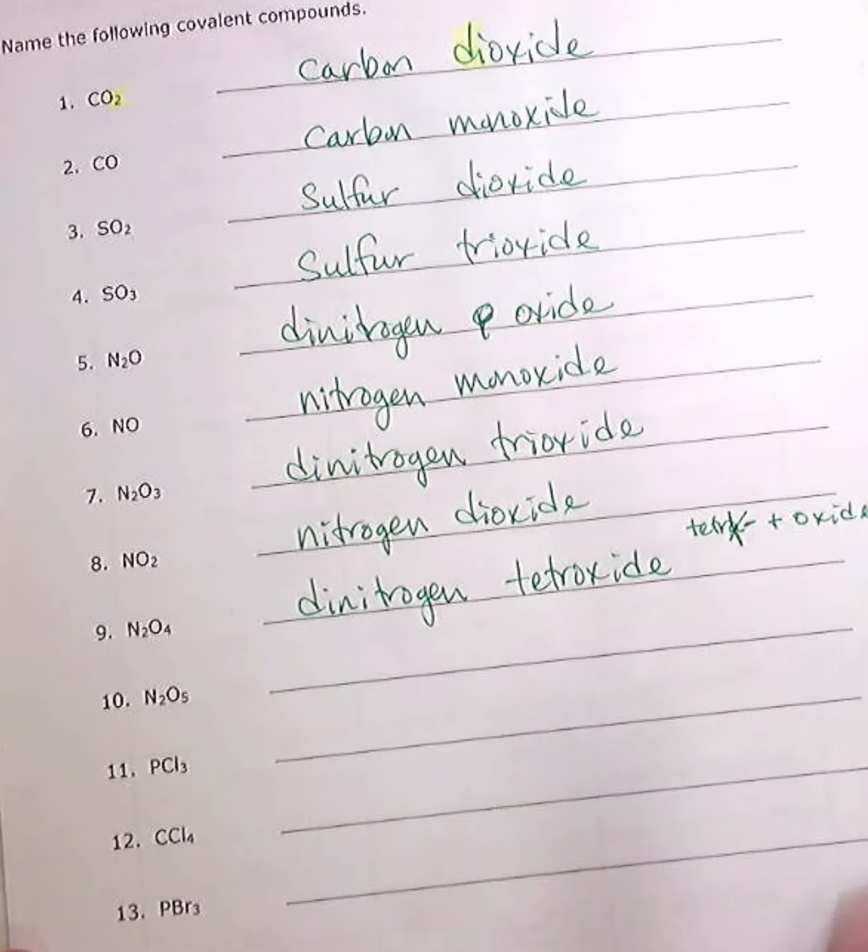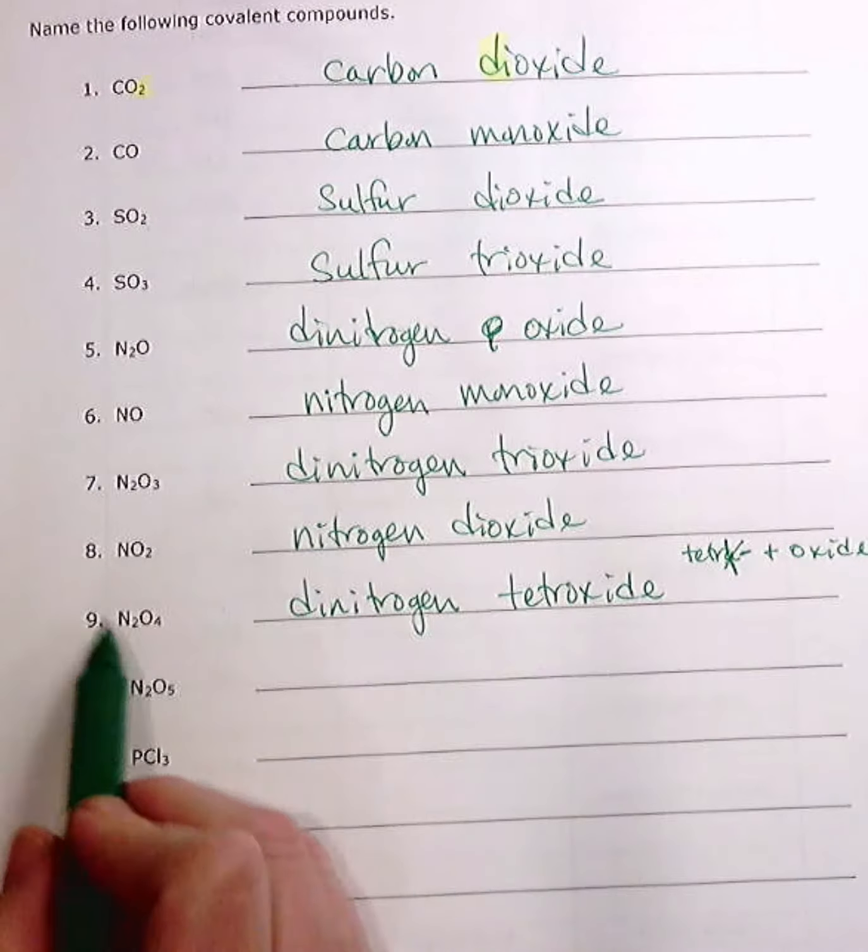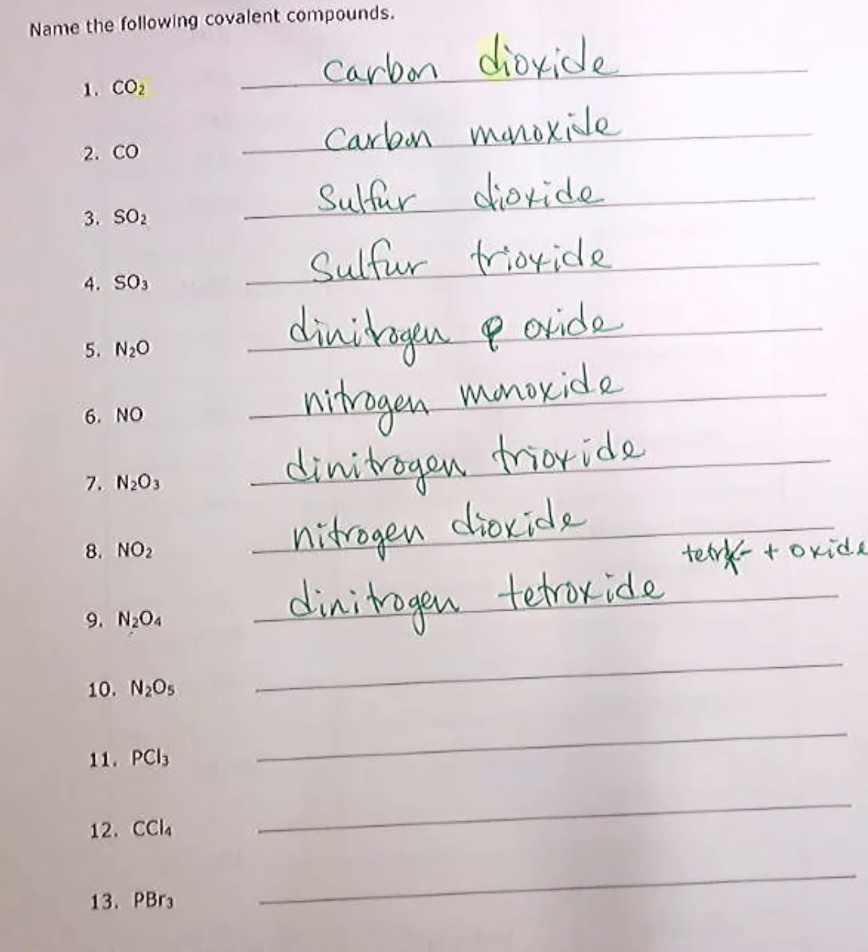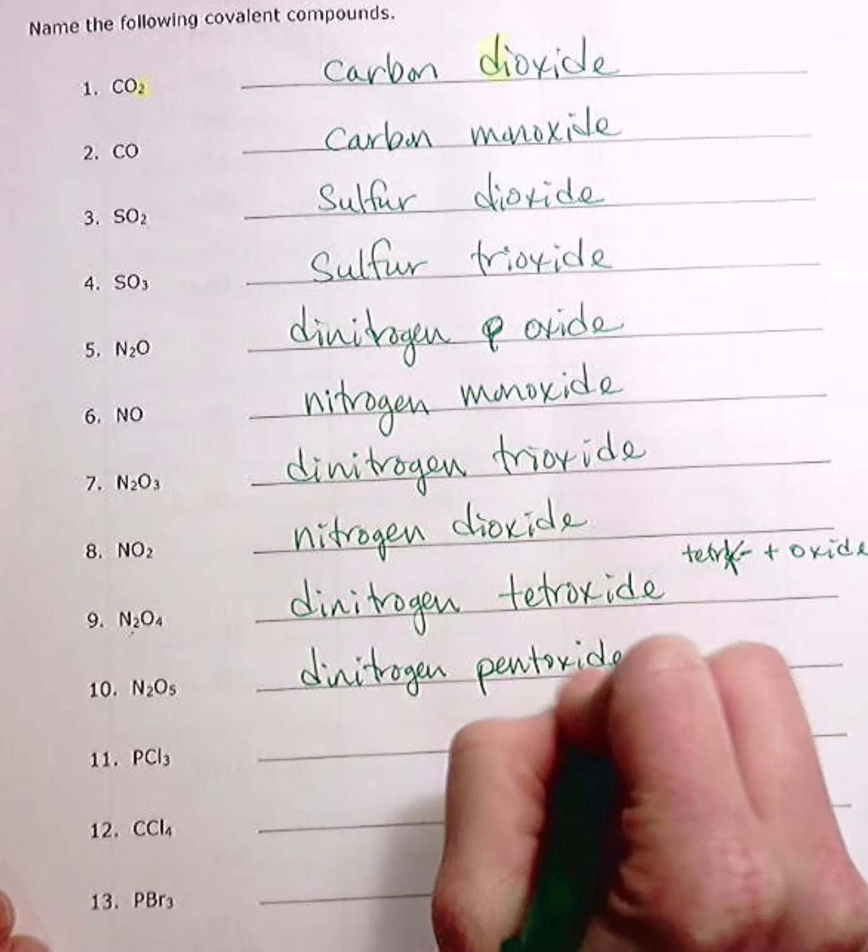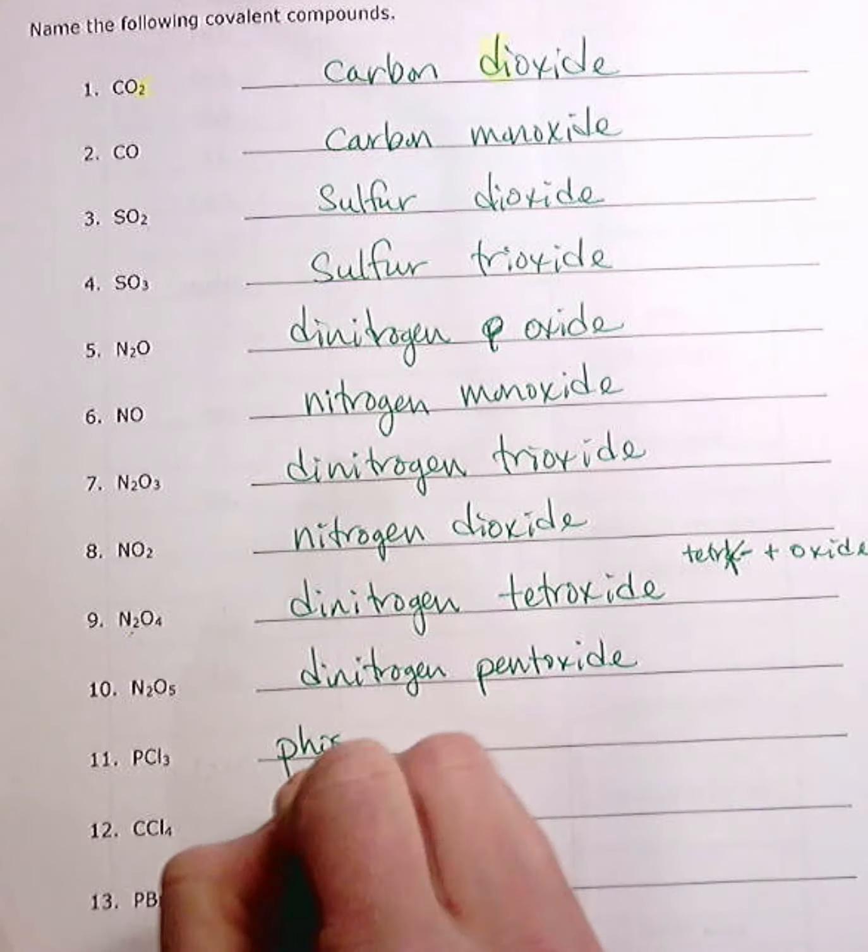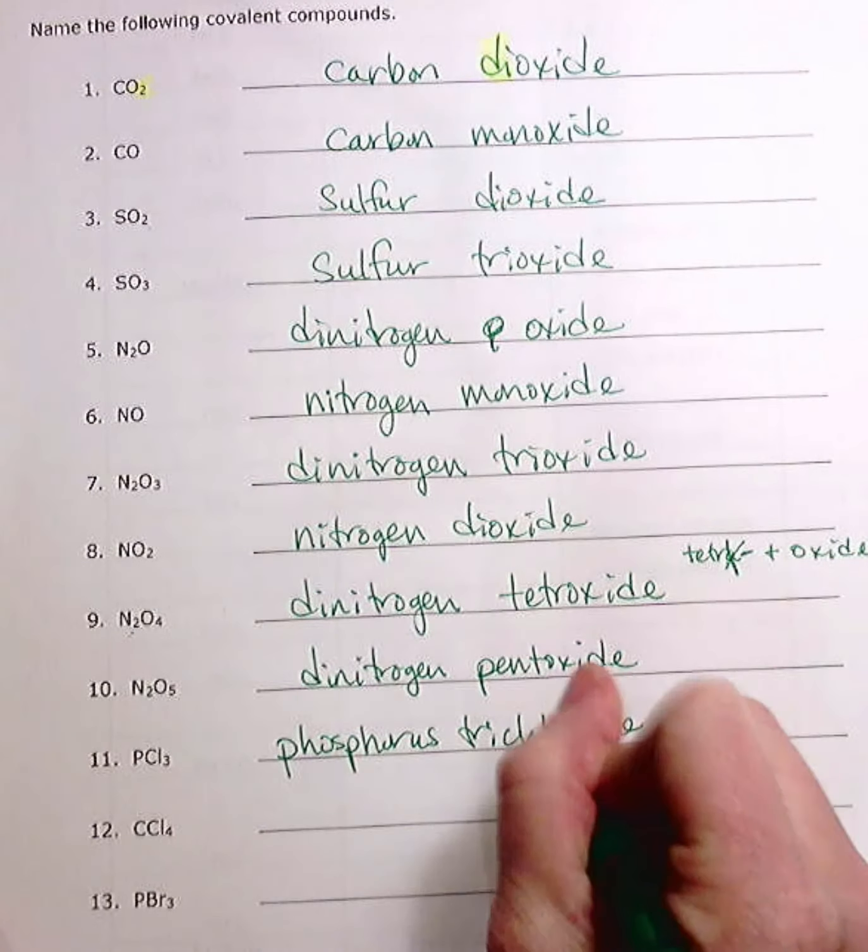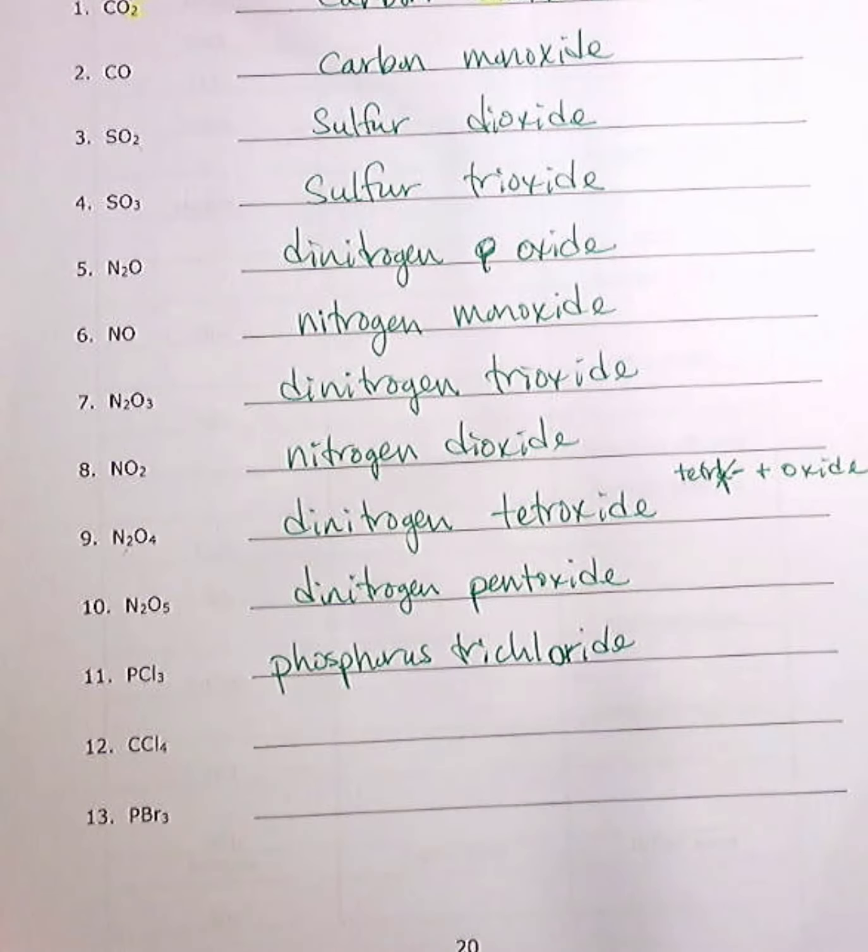The other thing I want to point out about number nine is that it's very easy to want to simplify these. Because you have just come out of ionic nomenclature and you're thinking, oh, this can be divided by two. It should really be NO2. You do not simplify with covalent compounds. You leave them as is. So be careful with that. All right. Number 10, dinitrogen pentoxide. Again, it would be pentoxide, but we took off the A to make it less awkward. 11, phosphorus trichloride. I used to use this a lot in graduate school. It's very stinky and smoky. All right. Number 12, carbon tetrachloride.